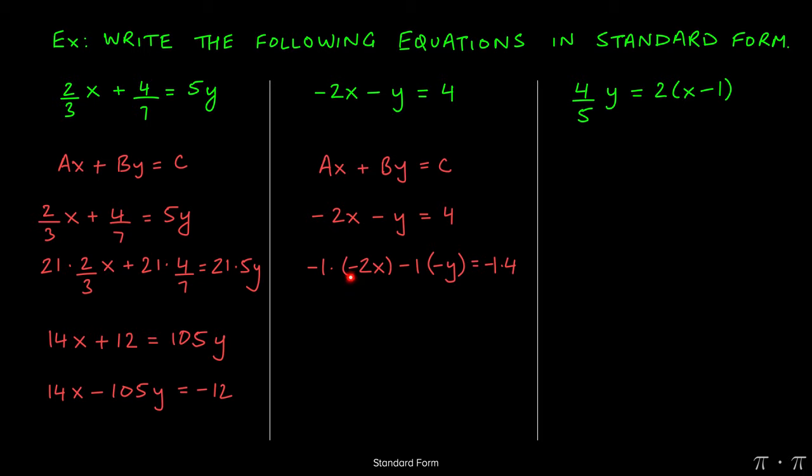Negative times a negative will make it positive. This negative times a negative will make it a positive still, and the negative times a positive will leave a negative. So this gives us 2x plus y equals negative 4, and let's see if all the conditions are satisfied. X and y on the same side with a constant by itself on the other side. That's done. We should have no fractions. That's okay. The leading coefficient of x has to be positive. Check. So this is the standard form of this equation. The equations are the same. They're just represented in different forms.